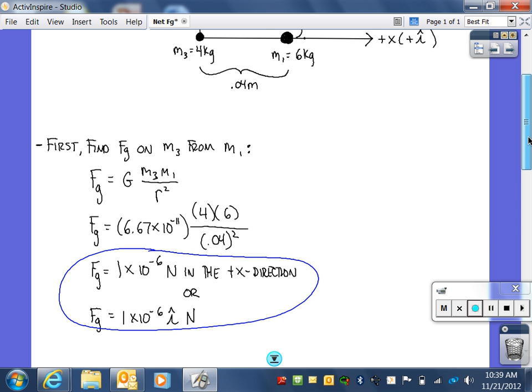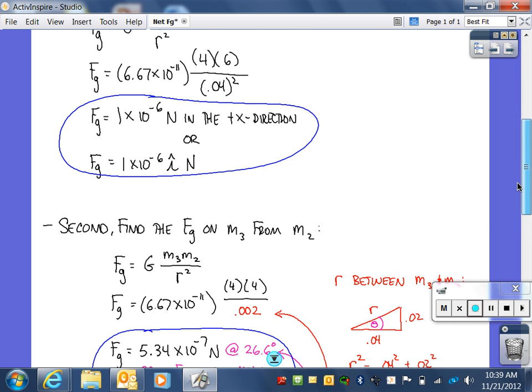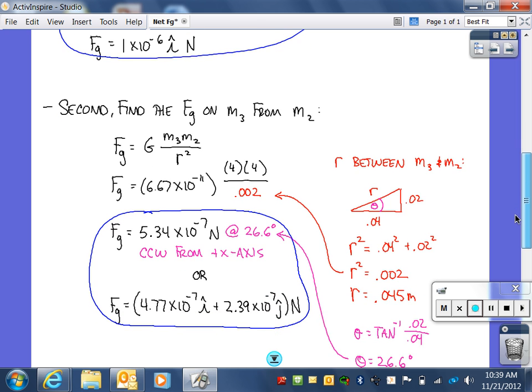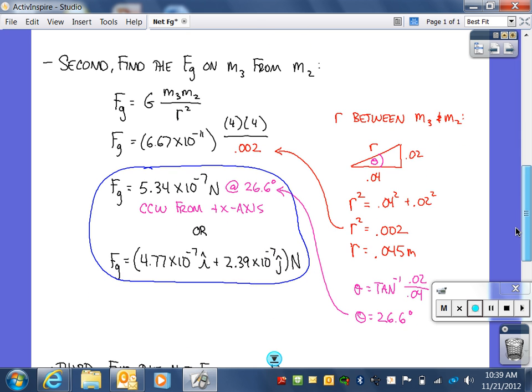Next, we will find the gravitational force on M3 from M2. Applying Newton's Law of Universal Gravitation to these two masses, FG equals GM3M2 divided by R squared. We can plug in G, the universal gravitational constant, which is always 6.67 times 10 to the negative 11th. M3 and M2 are both 4 kilograms.